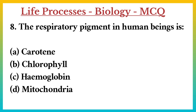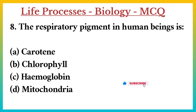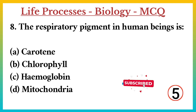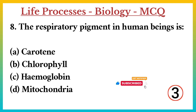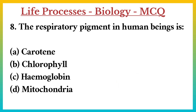Question number 8. The respiratory pigment in human beings is: A. Carotene. B. Chlorophyll. C. Hemoglobin. D. Mitochondria. Answer: C. Hemoglobin.